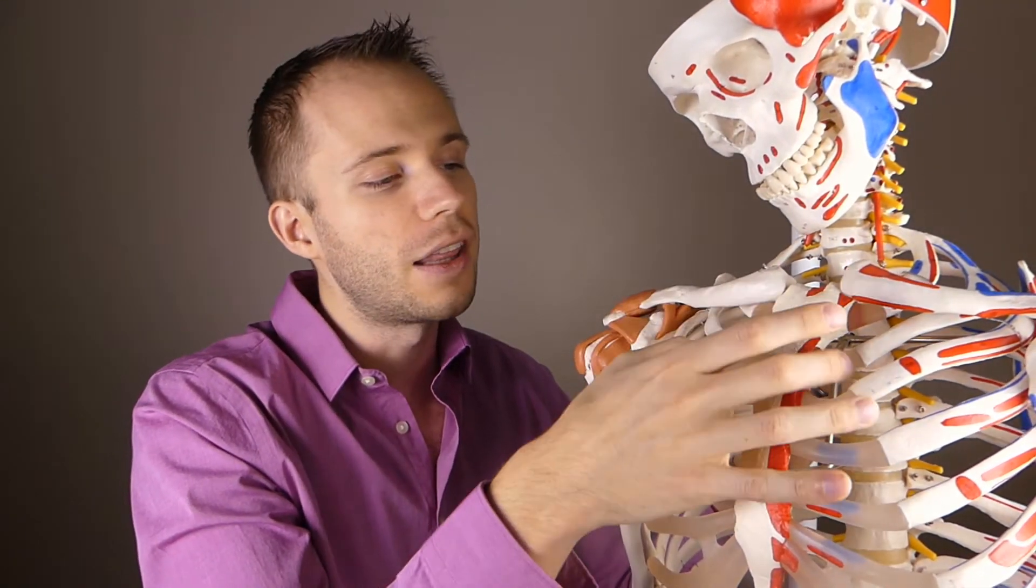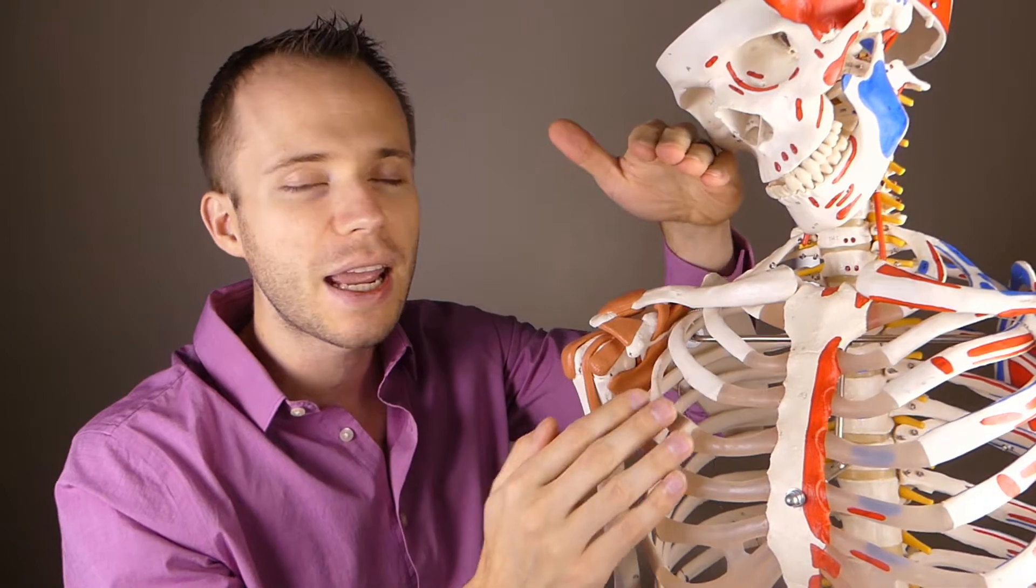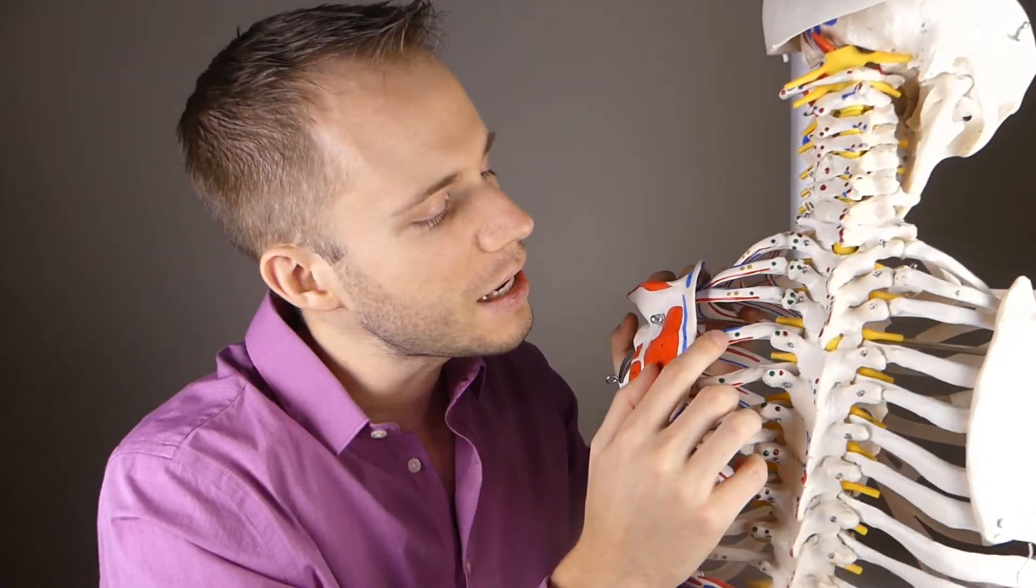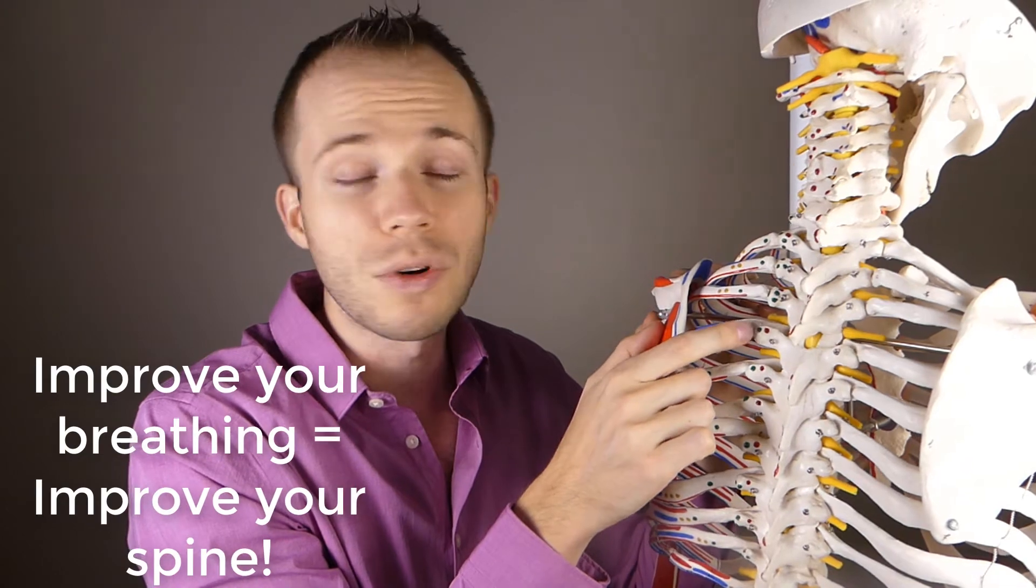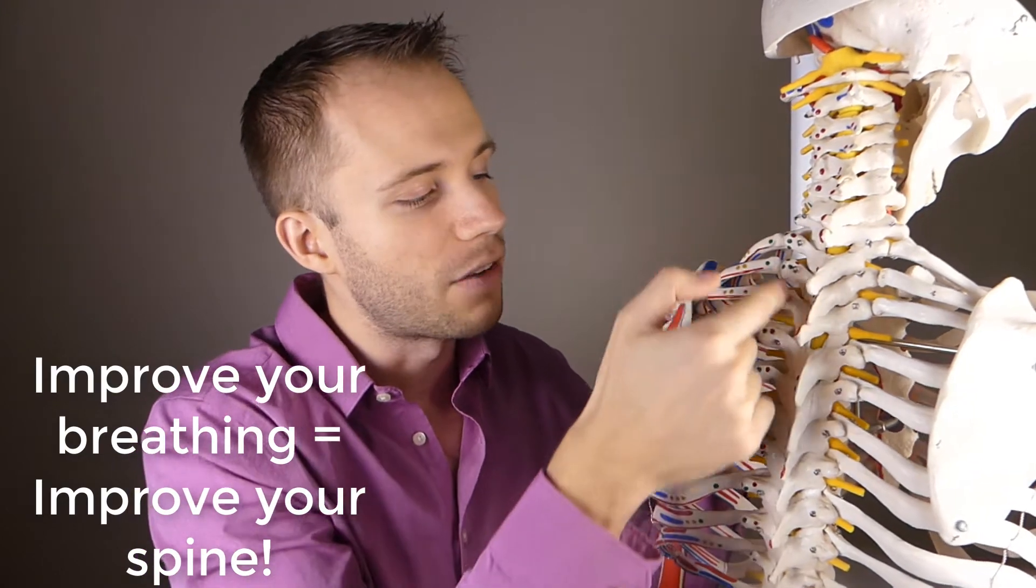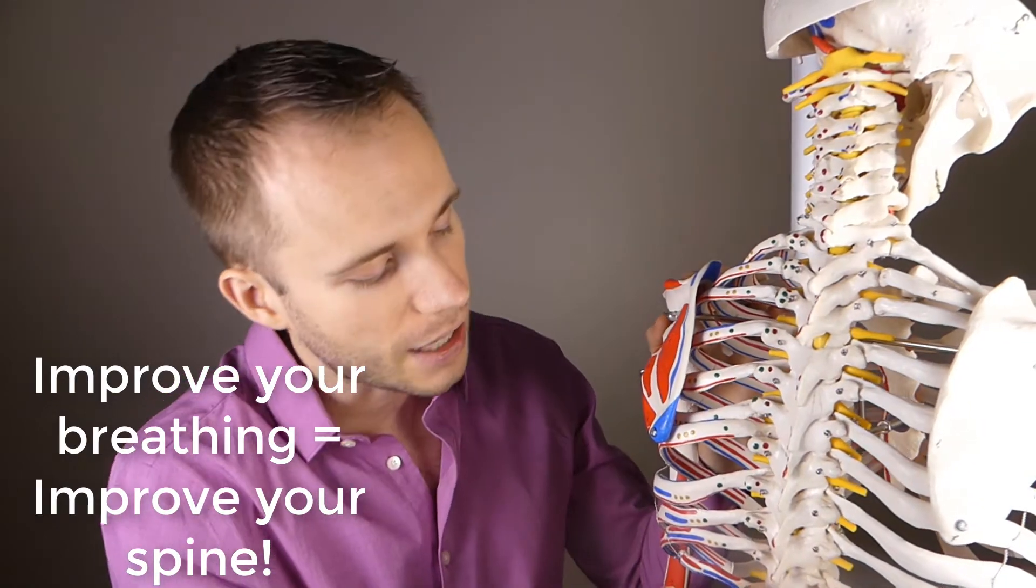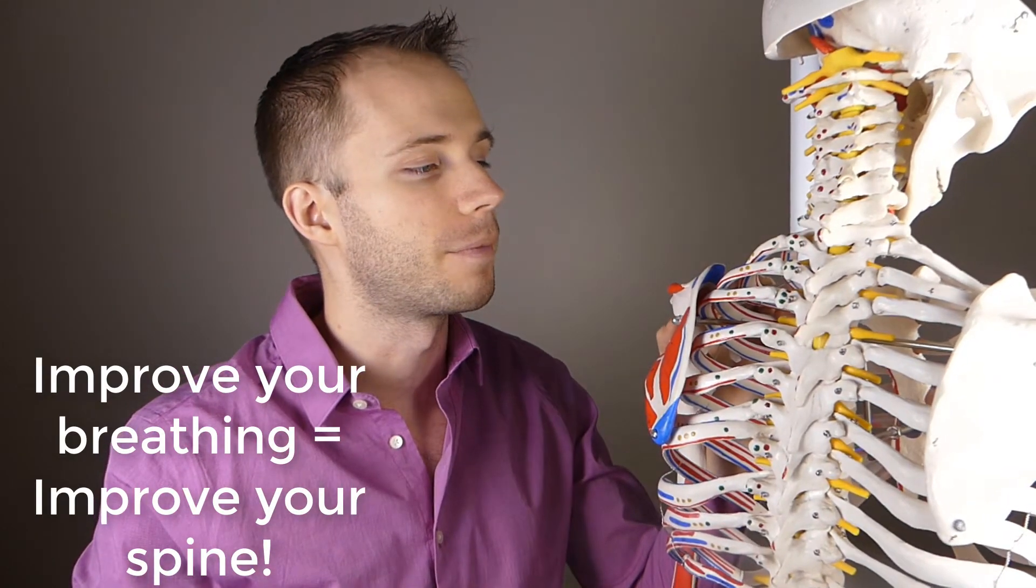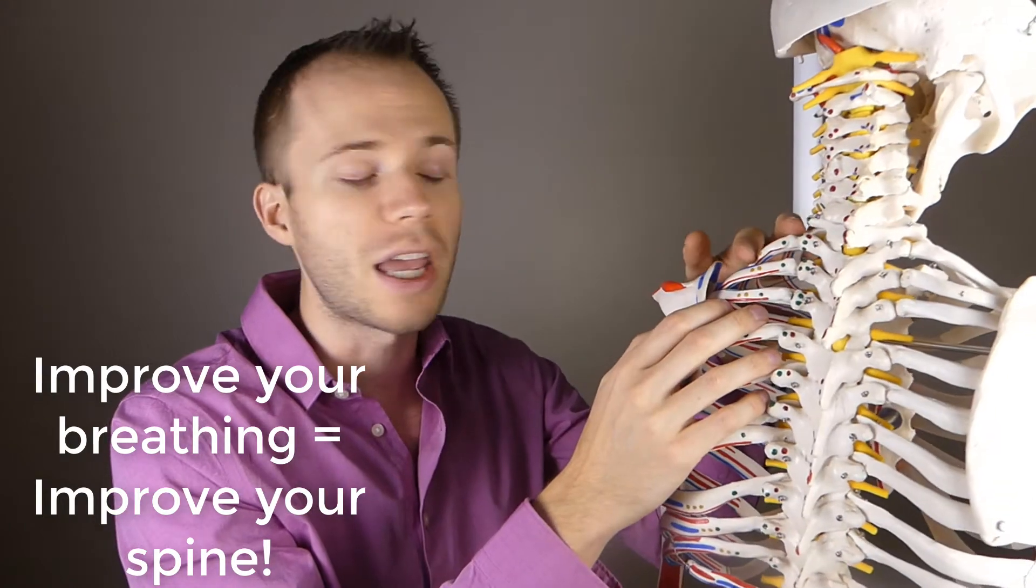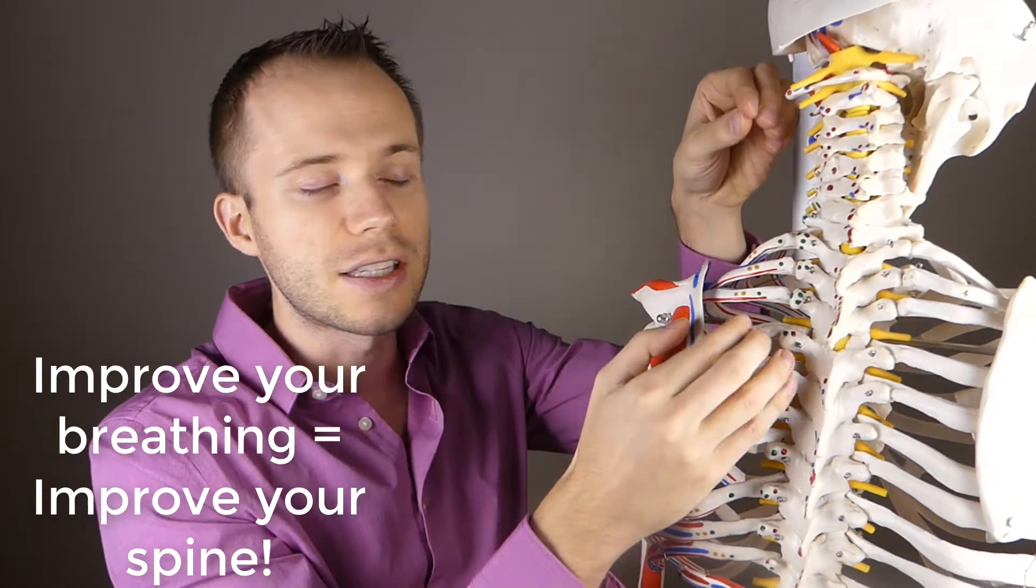When we're looking at the ribcage, what we want to think about is often the space in between the ribs, and these ribs are allowed to expand outwards. And if we flip this around to the backside here, you can see that the ribs have a direct articulation with the spine. Those ribs come right into what's called the transverse process of the thoracic vertebrae, all the way down to the 12th rib, all the way from the top of the thoracic spine.